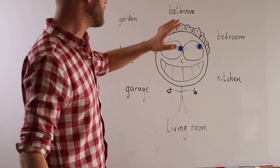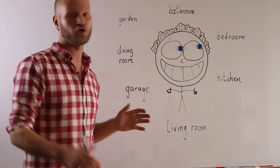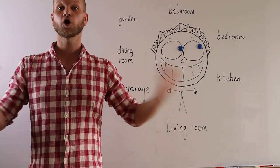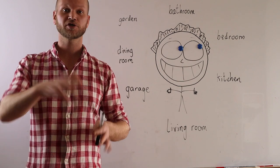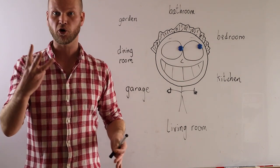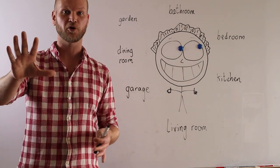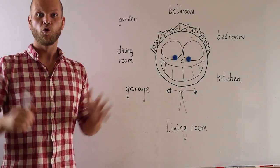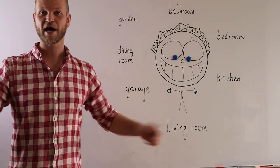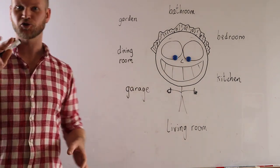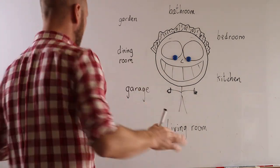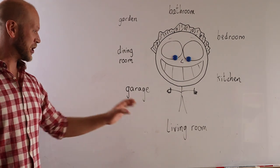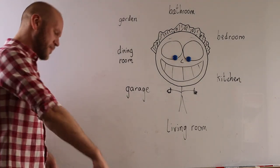So the kids answer: 'He's in the bedroom.' Good job, so you are the winner! Normally I play so the first kid to get three points or five points is the winner. 'Where is that?' Three, two, one, bang! 'He's in the living room.' Good job!